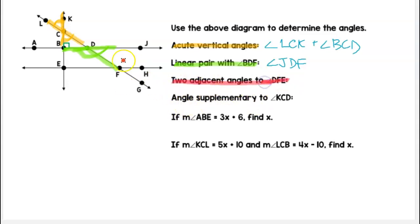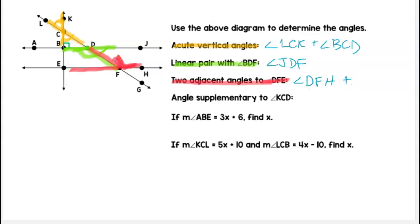Now I want to find two adjacent angles to angle DFE. I need to pick two angles that are next to this angle. I'll identify this angle right next to it — that is angle DFH — and then I also have the angle next to it right here, that is angle EFG.